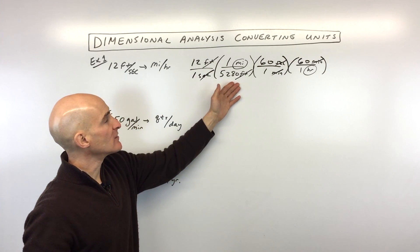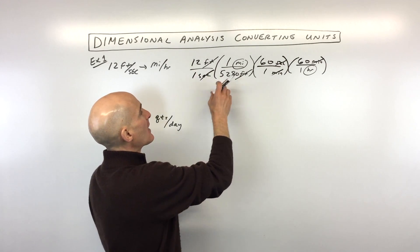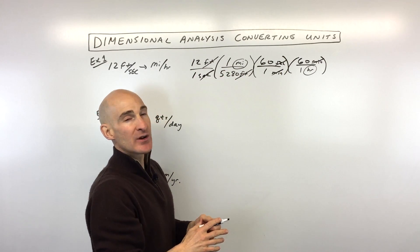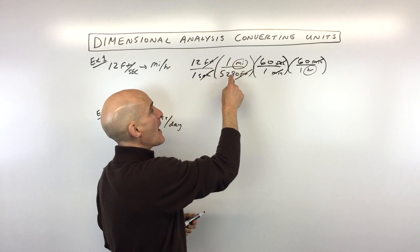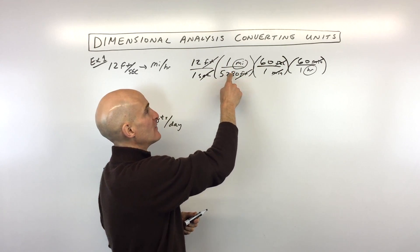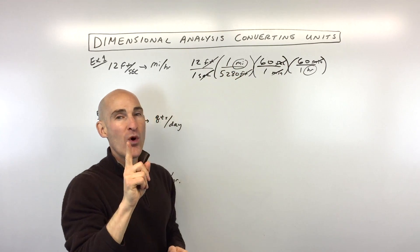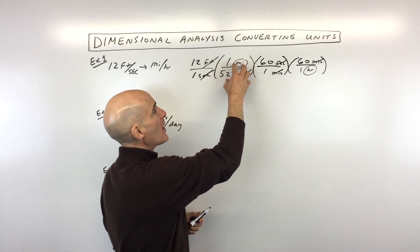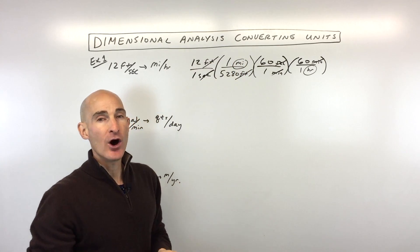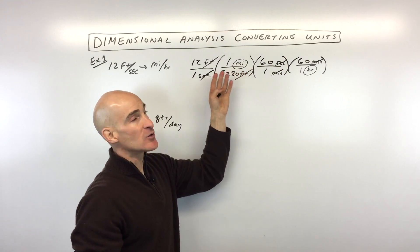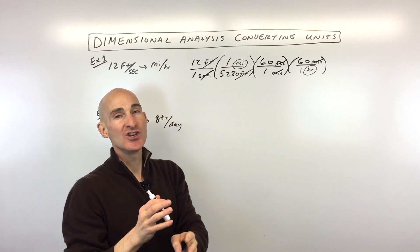Now you might be wondering, why does this work? Well, when you're multiplying by one mile over 5,280 feet, one mile is equal to 5,280 feet. Anything divided by itself is one. When you multiply by one, it doesn't change the value of this initial quantity, it just changes the units. So we're not changing the quantity, just the units.